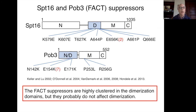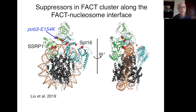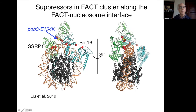Our analysis was really helped by the structure of human FACT with the nucleosome, done by Carolyn Luger's lab. Given the conservation between yeast and human, we were able to place most of these mutations on that structure. Here: dark gray are histones, gold is nucleosomal DNA, green is SSRP1 (human Pob3), and blue is human Spt16. All the red balls are positions of our mutants — except for the yellow one which is the Pob3 mutation I've been discussing — and they cluster along the FACT–nucleosome interface.